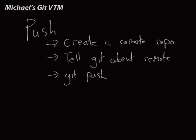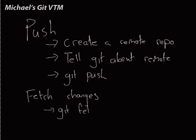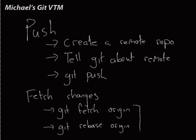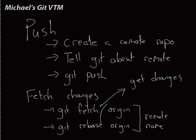That's only really half the story though. What if we want to get changes that someone else has written? So we also need to fetch changes. How we do that is by typing git fetch, and then git rebase. Origin here is the name of the remote — it doesn't necessarily have to be origin. This is how we fetch changes.